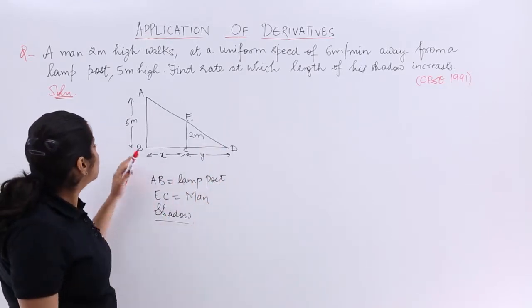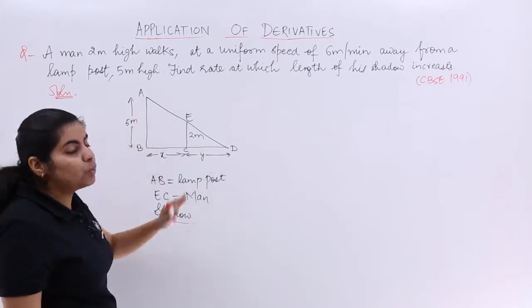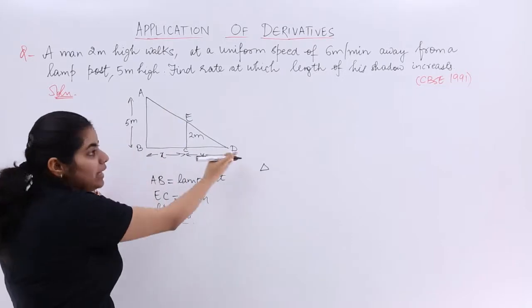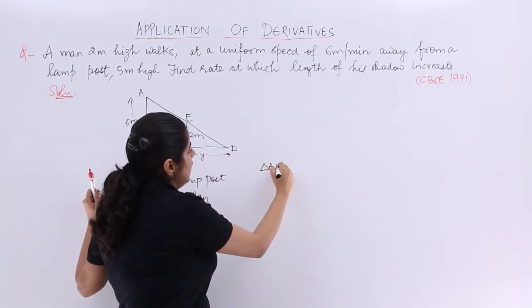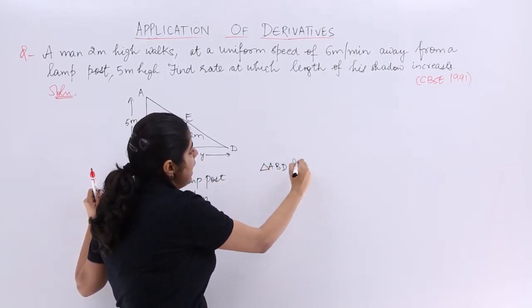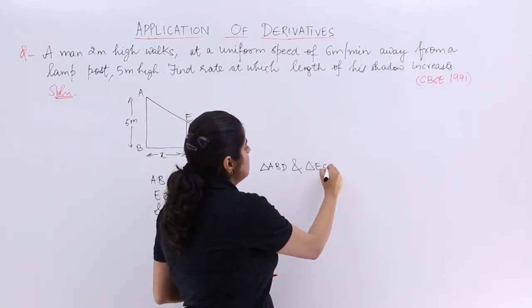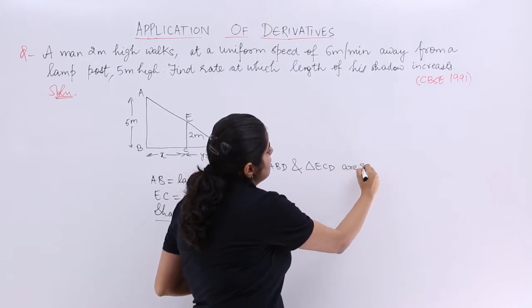Now I see that there are 2 triangles and the 2 triangles namely are triangle ABD and the other triangle is triangle ECD. They seem to be similar, right?